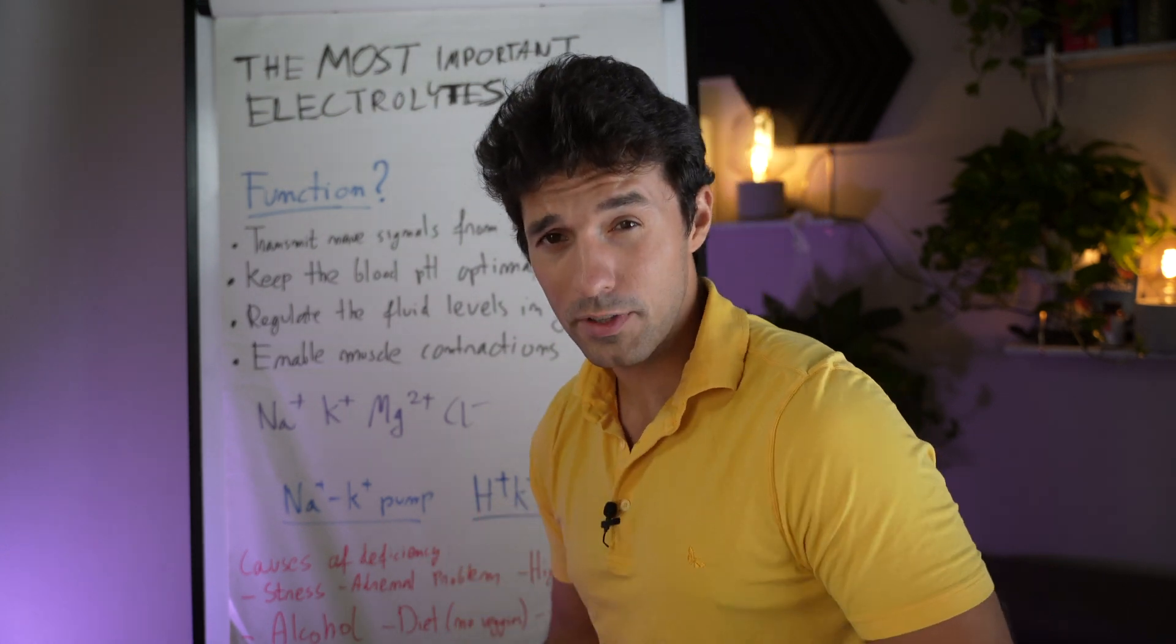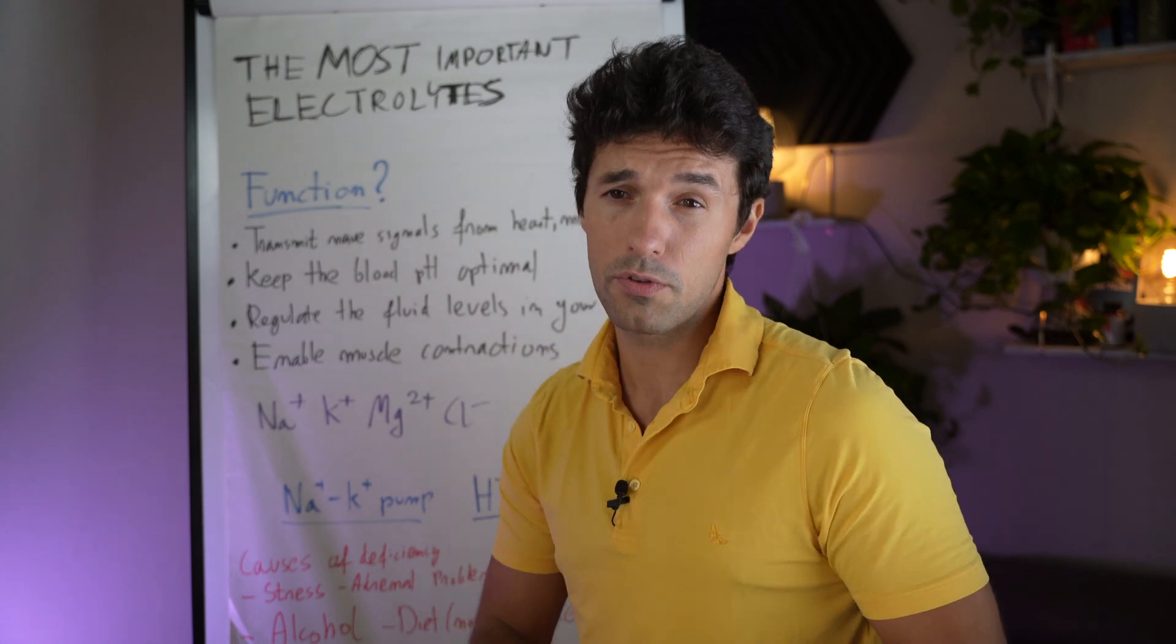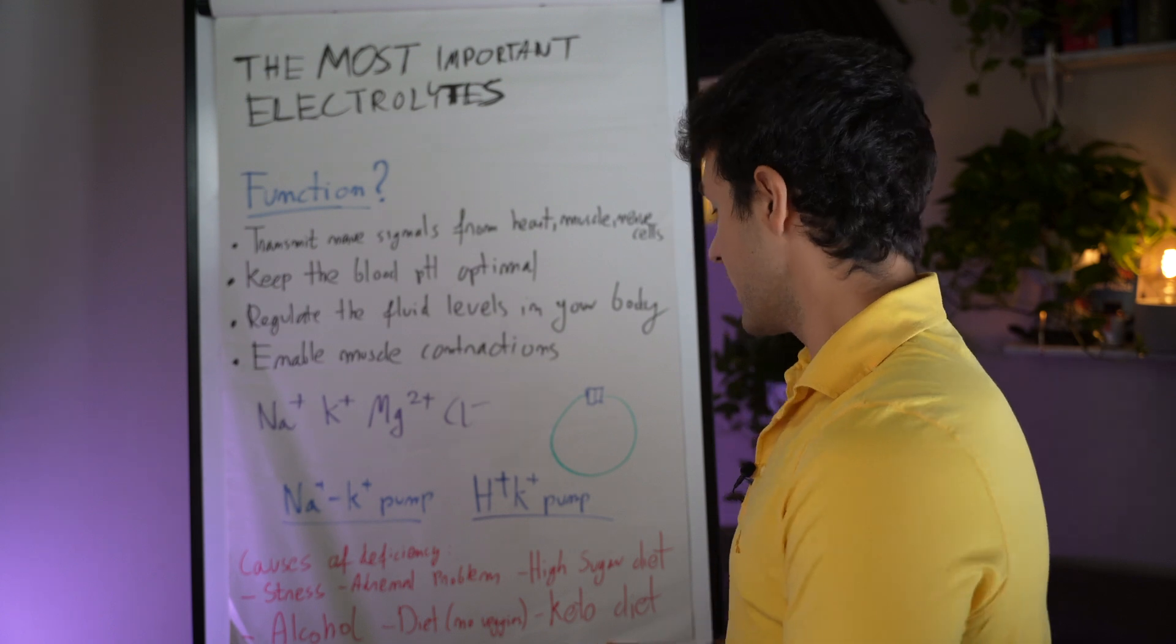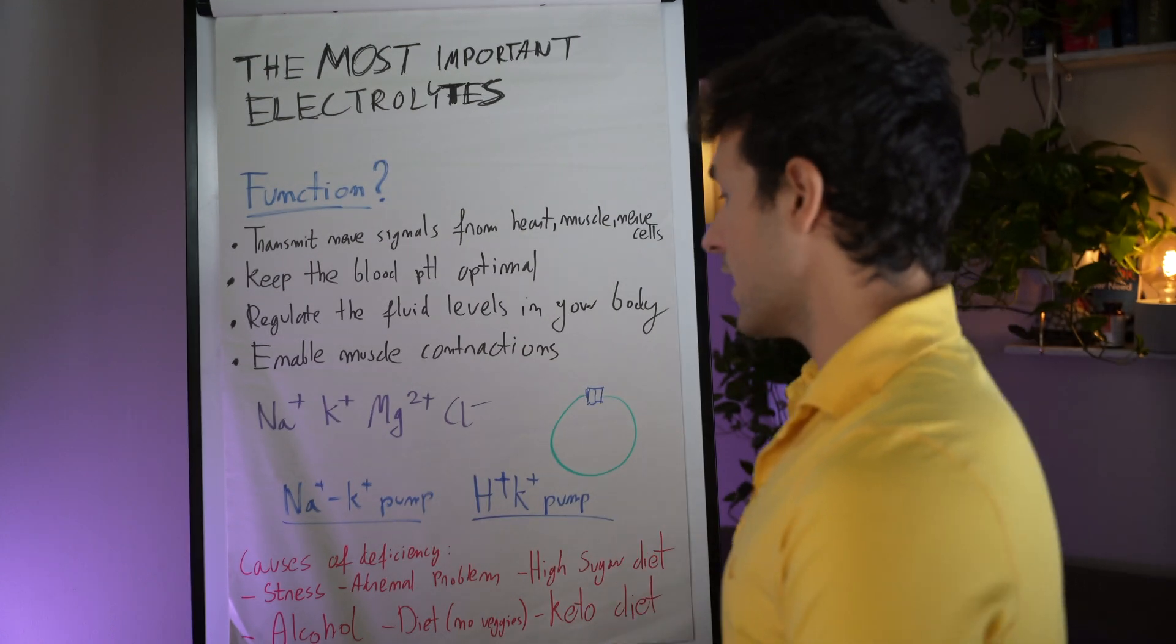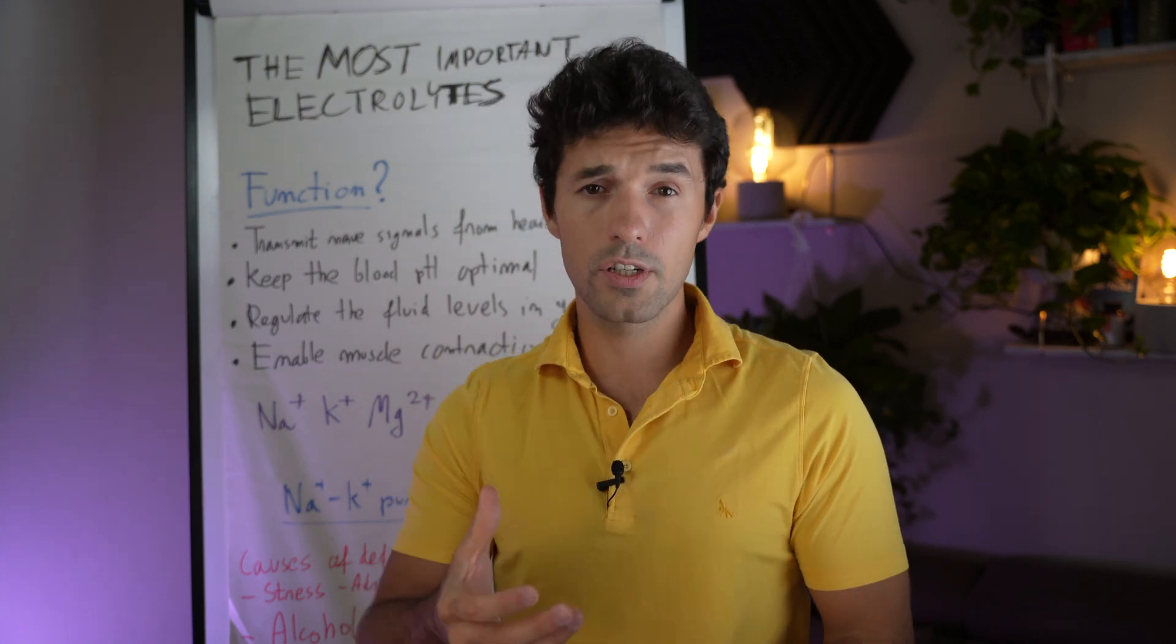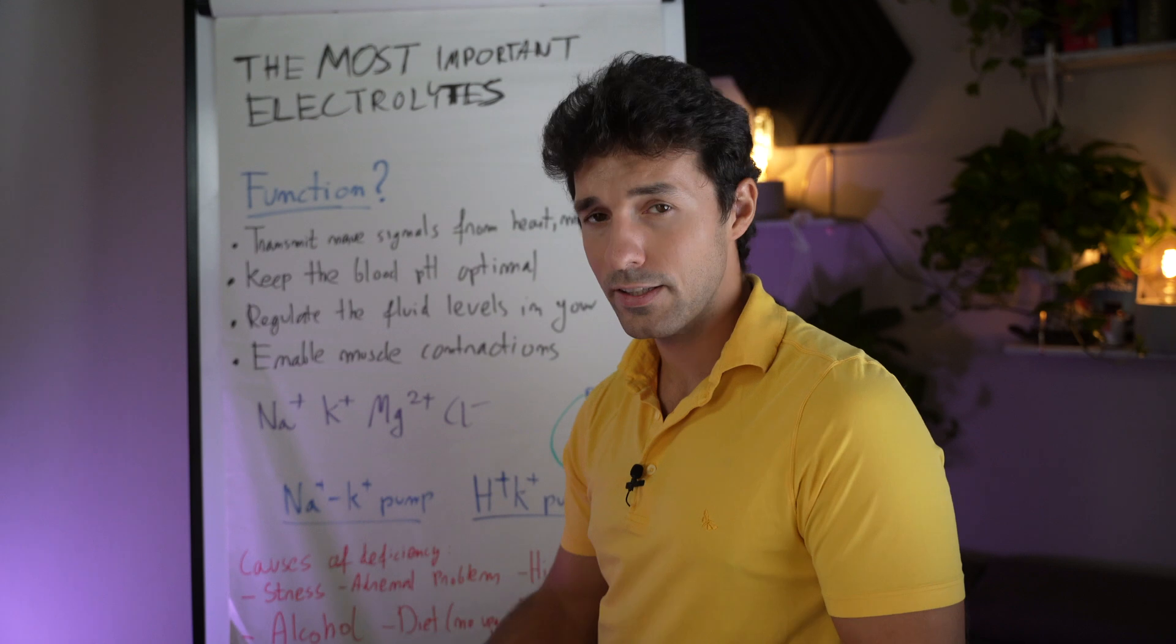The first one is stress. Stress is very common in thyroid disease. Another one is adrenal problems—it's also super common. So those two are the most common pretty much in hypo but also hyperthyroidism. Then we have high sugar diet. So if you're eating lots of sugar, carbohydrates, sugary drinks, it's better to avoid it because high sugar depletes these electrolytes.